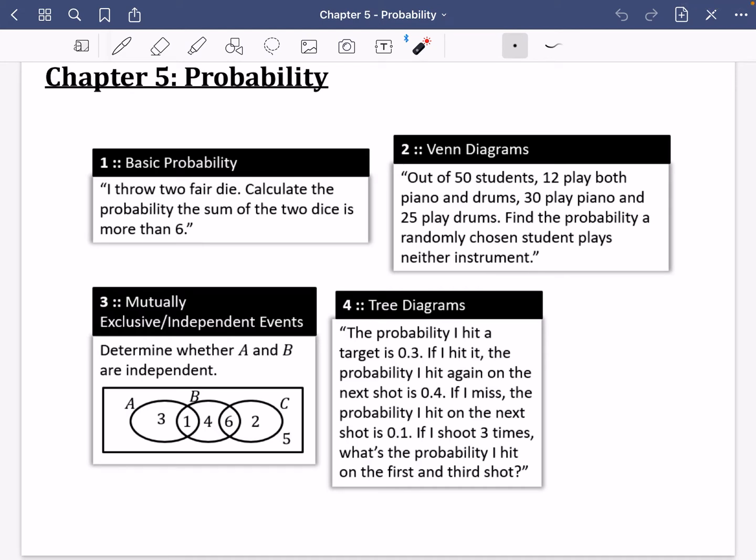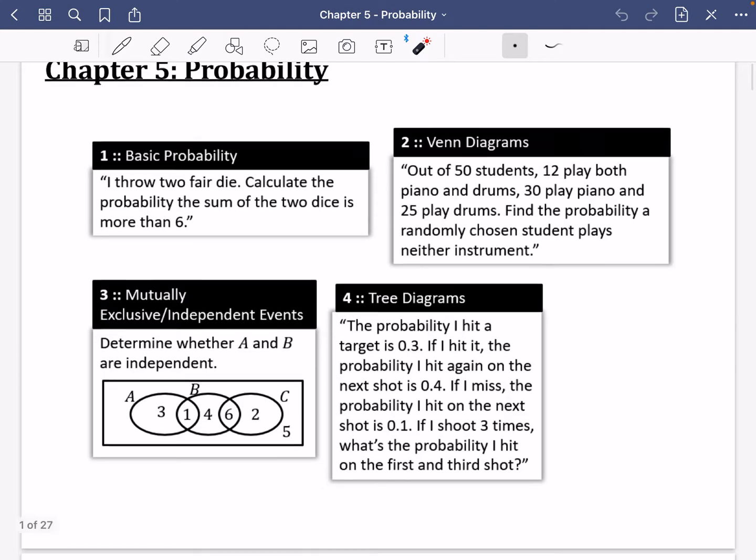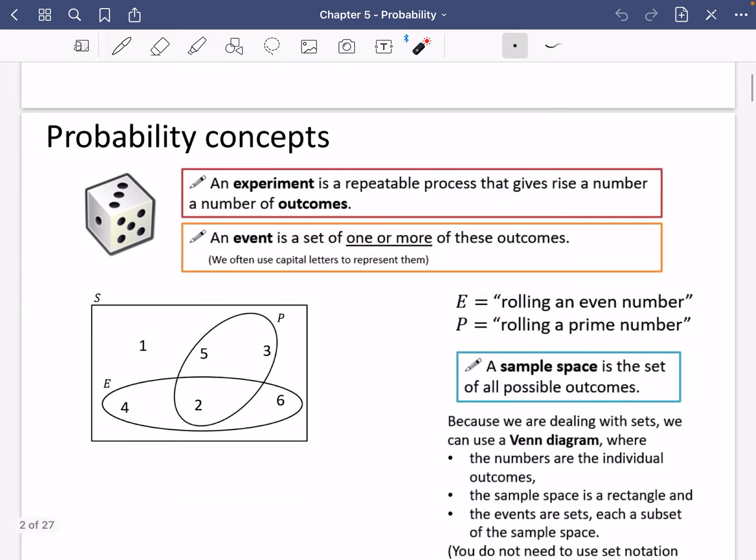Hey guys, so we're looking at chapter 5 for applied year 1 which is on probability. The best thing about this is this is mostly stuff from GCSE, there's just some new things down here about mutually exclusive and independent events. We're going to cover some basic probability, Venn diagrams, mutually exclusive and independent, and tree diagrams as well. Let's get started with some probability concepts.